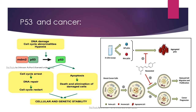If apoptosis happens, the death and elimination of the damaged cell occurs, and by this means cellular and genetic stability is maintained — hence p53 is called the guardian of the genome. If p53 is inactivated or insufficient, and damaged DNA enters the cell cycle, it cannot be arrested and apoptosis cannot be triggered. As a result, more and more damaged cells accumulate in the cell cycle, which can cause cancer formation. Therefore, p53 is very necessary for cancer prevention.